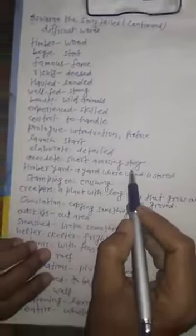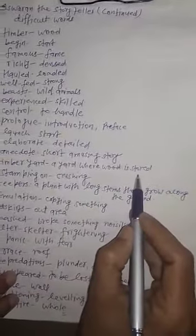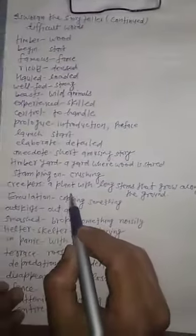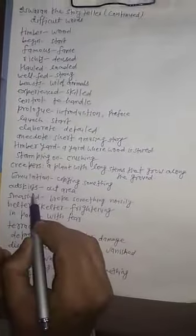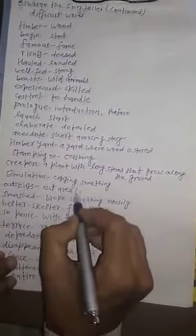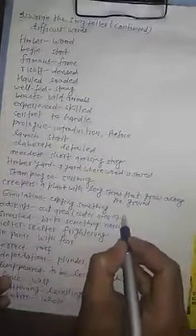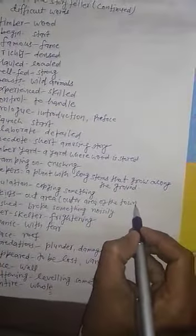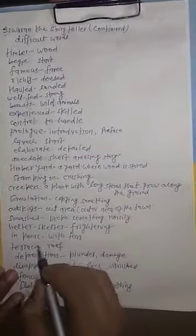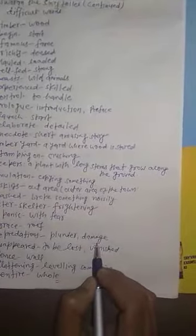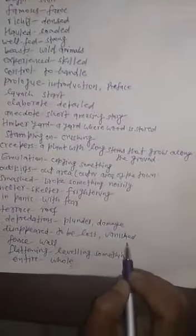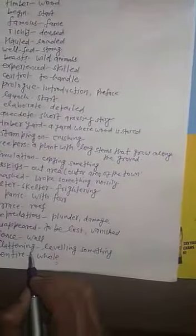Anecdote means short emerging story. Timber yard means a yard where wood is stored. Stomping on means crossing. Creepers means a plant with long stems that grow along the ground. Emulation means copying something. Outskirts means outer area of the town. Smashed means broke something noisily. Helter-skelter means frightening. In panic means with fear. Terrace means roof. Depredation means plunder or damage. Disappeared means to be lost or vanished. Fence means wall. Flattening means leveling something. Entire means whole or total.